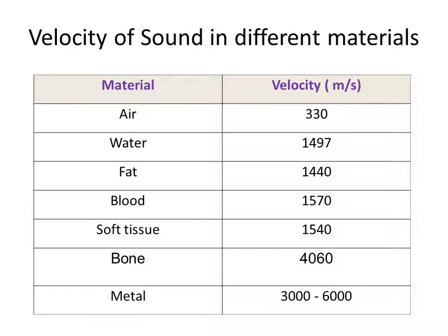This table shows the velocity of sound in different materials. The numbers illustrate the concept: materials with lower density have lower sound velocity, while denser and stiffer materials have higher velocity. For example, air has a velocity of approximately 330 meters per second, while in bone the velocity reaches approximately 4000 meters per second, and in metal it ranges from 3000 to 6000 meters per second.